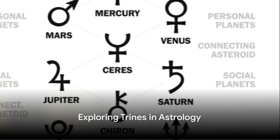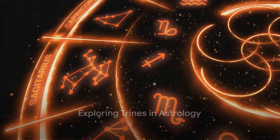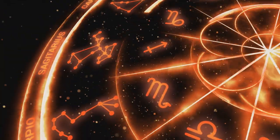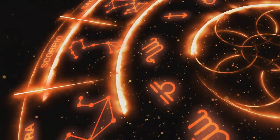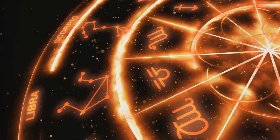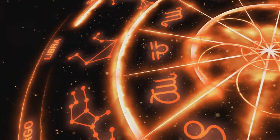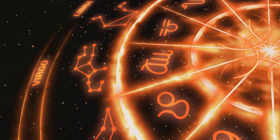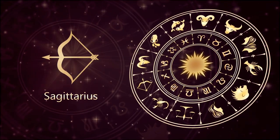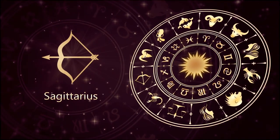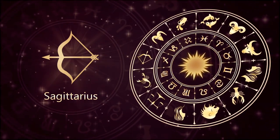Starting off with trines. Picture three celestial bodies forming an equilateral triangle in the sky, each corner 120 degrees apart. This is a trine. In the world of astrology, trines represent harmony and ease.